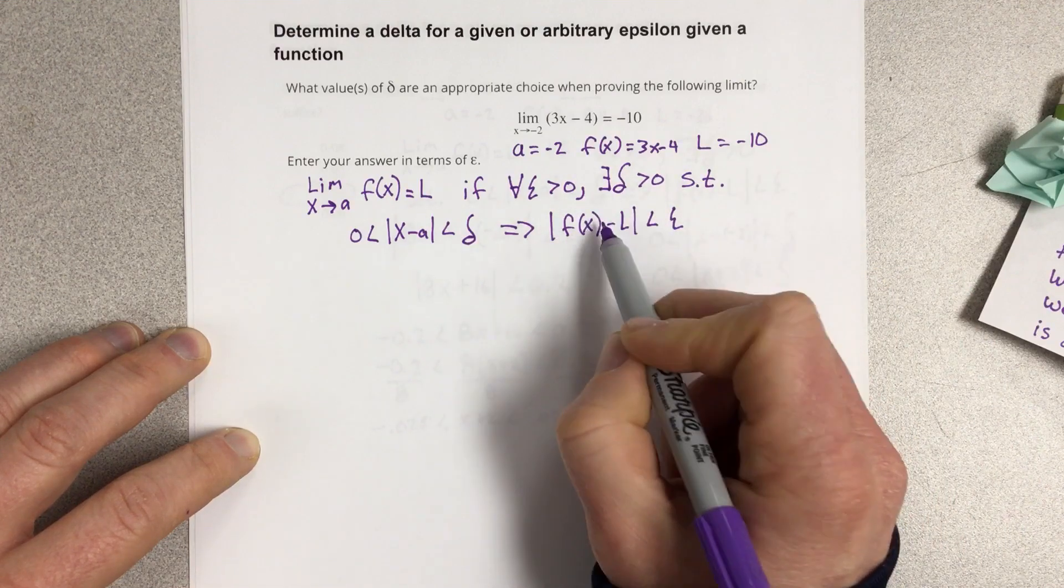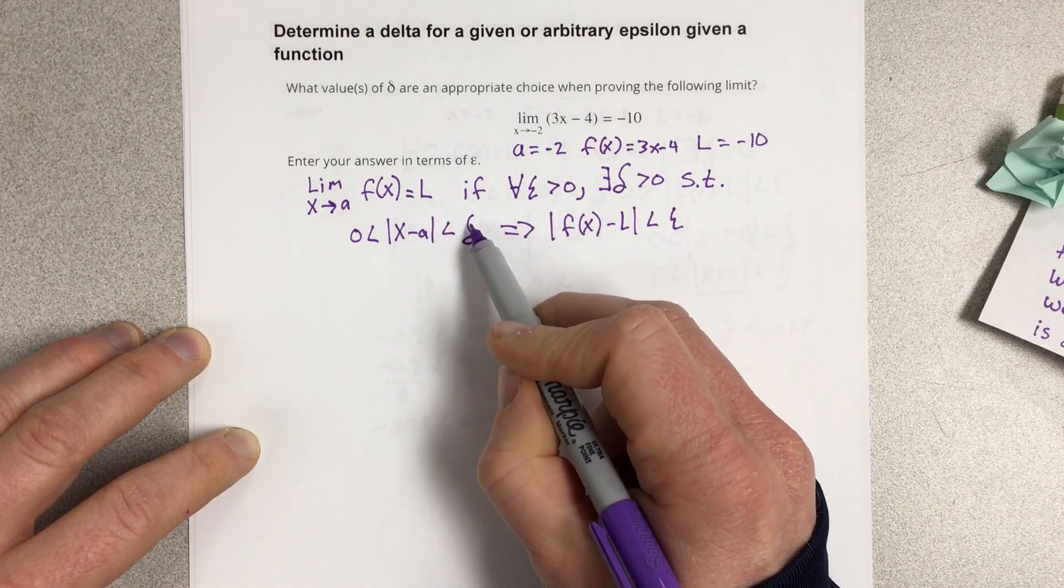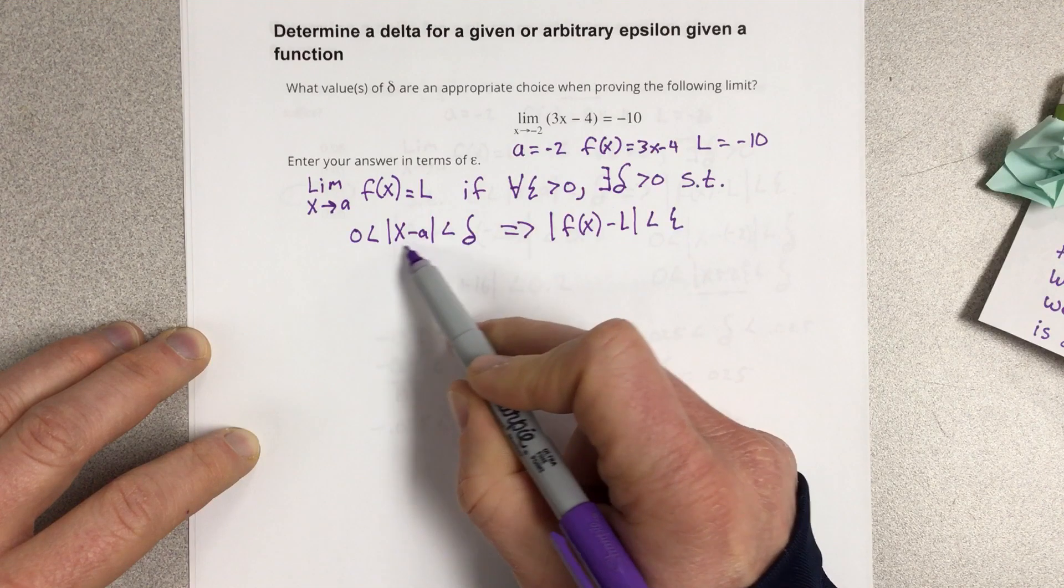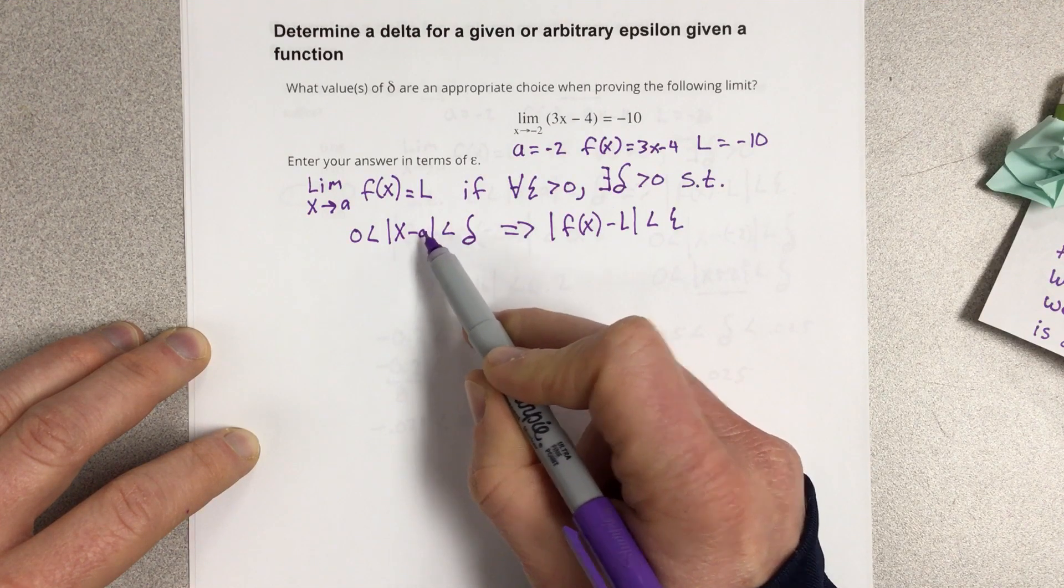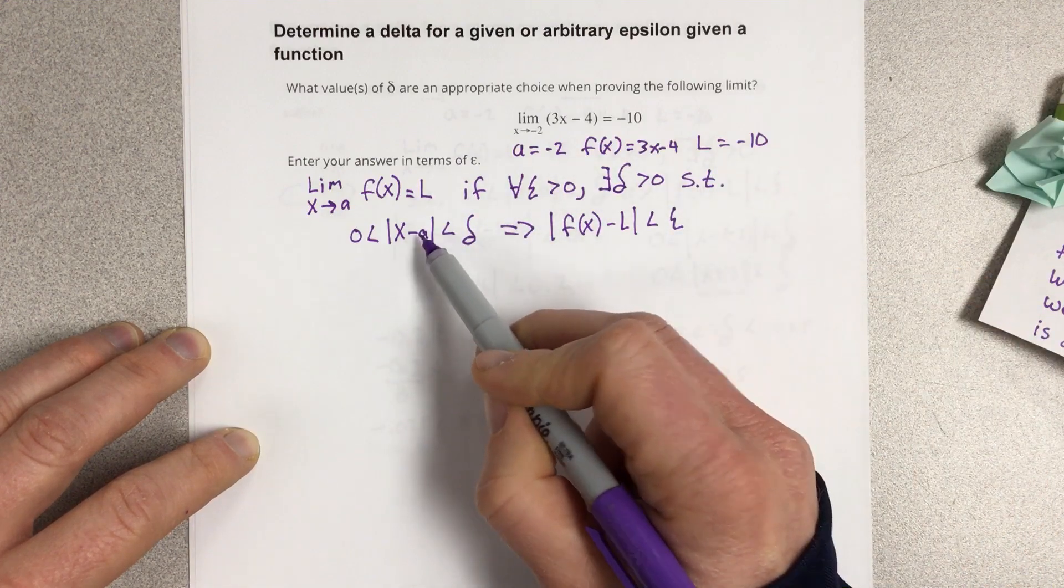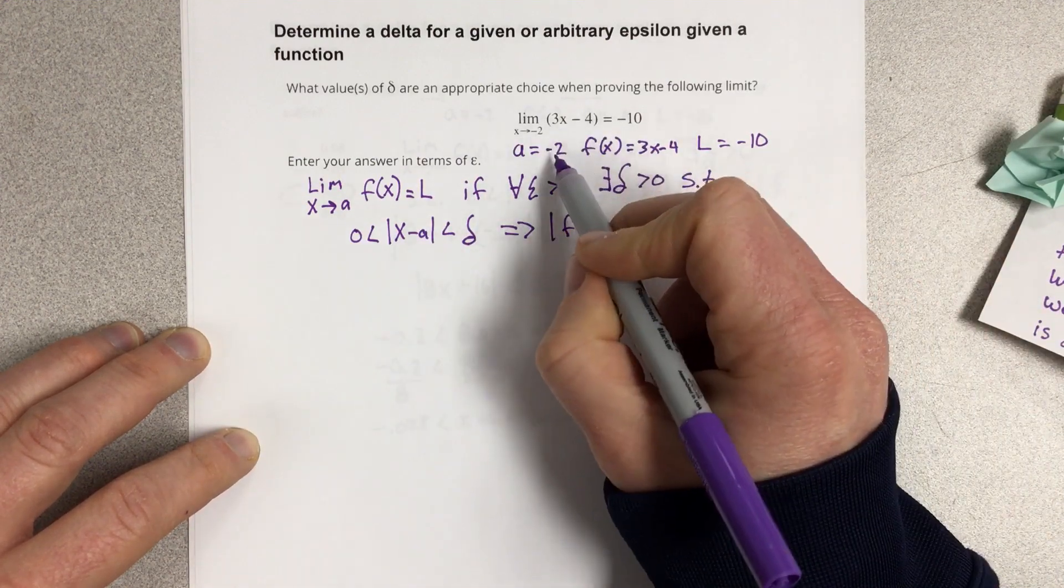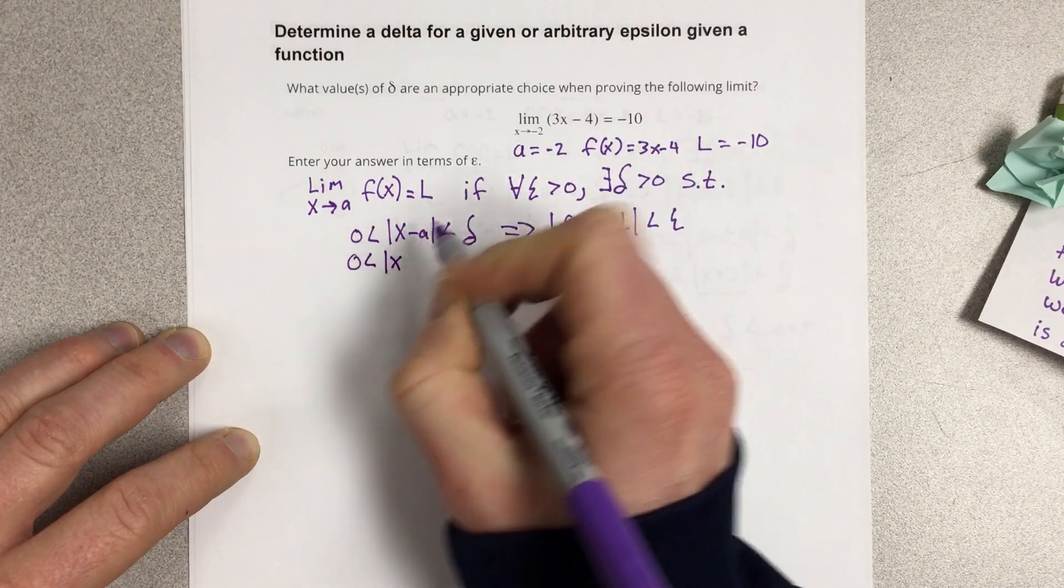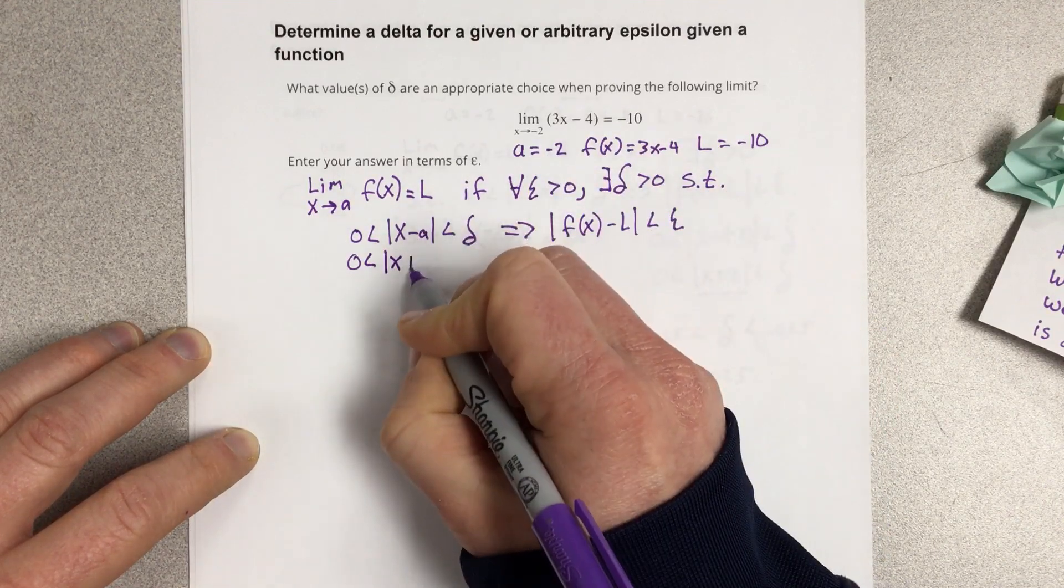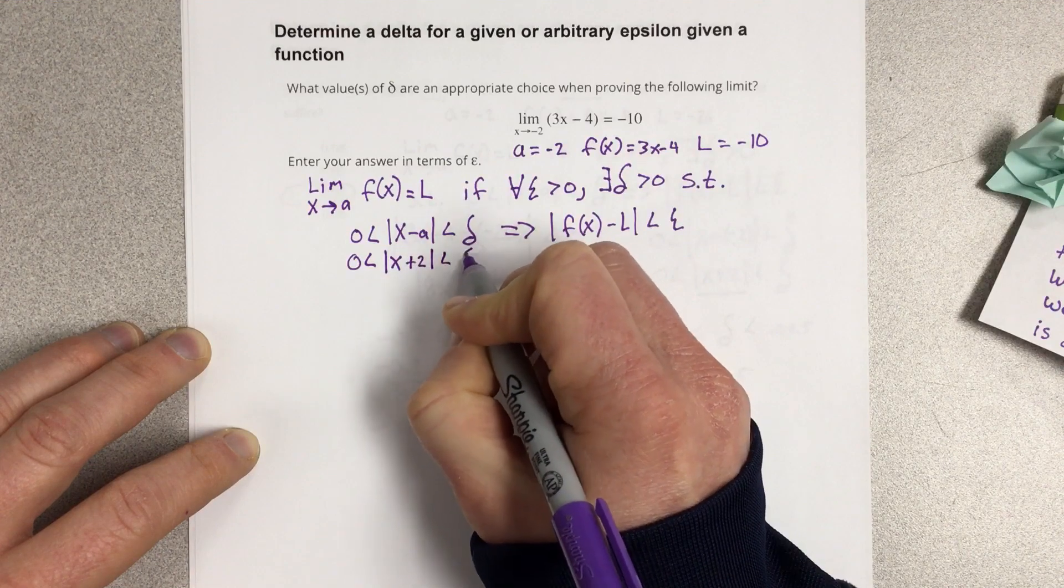but to do that we have to pick a delta, a tolerance for delta that restricts our x values to a certain closeness to our limiting value that we're trying to get close to. And our limiting value that we're trying to get close to is this negative 2. So I'm going to write that as 0 less than absolute value of x plus 2 less than delta.